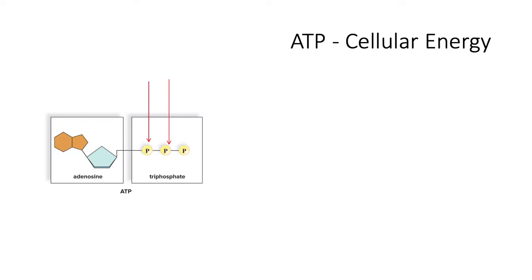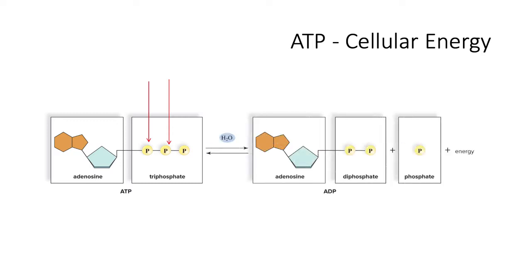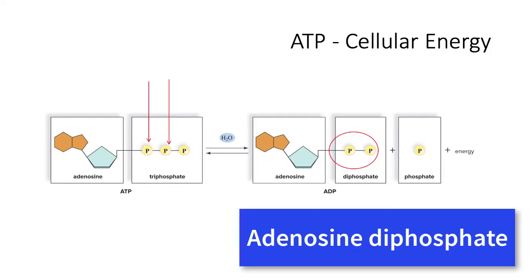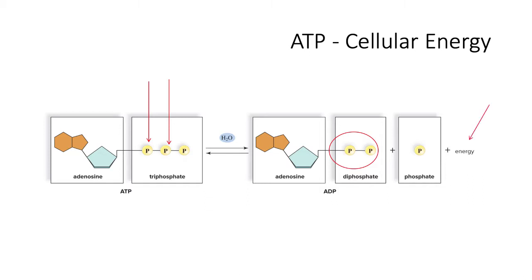Once we need energy to do work in the cell, we can release the third phosphate. As the third phosphate bond is broken, energy is released, and now the energy molecule only has two phosphates. It is now called ADP, or adenosine diphosphate, di meaning two, for the two remaining phosphates. The energy released can do work, for example, performing active transport in the cell.